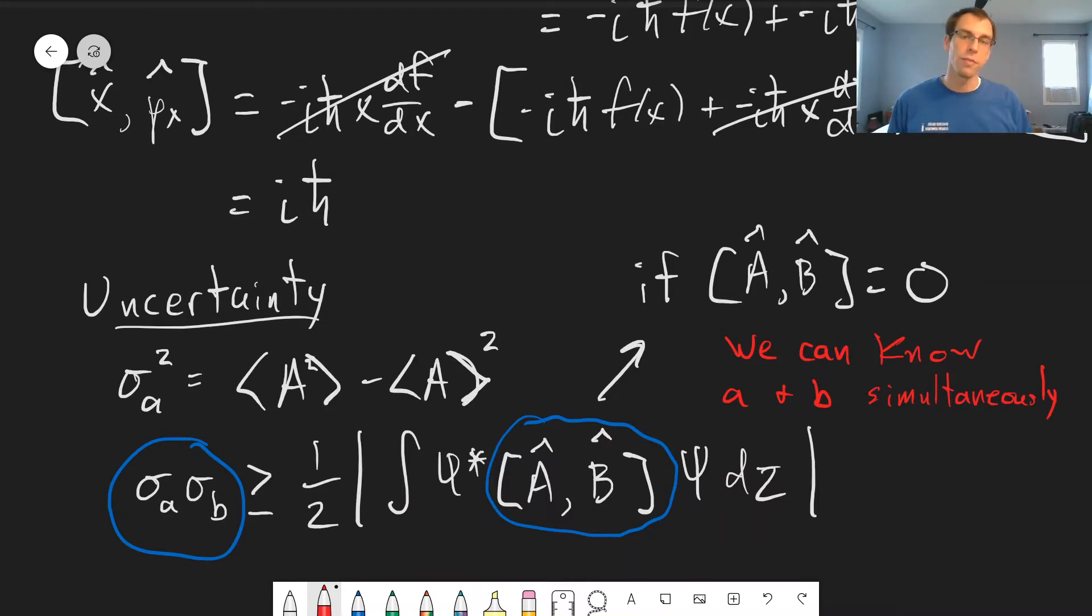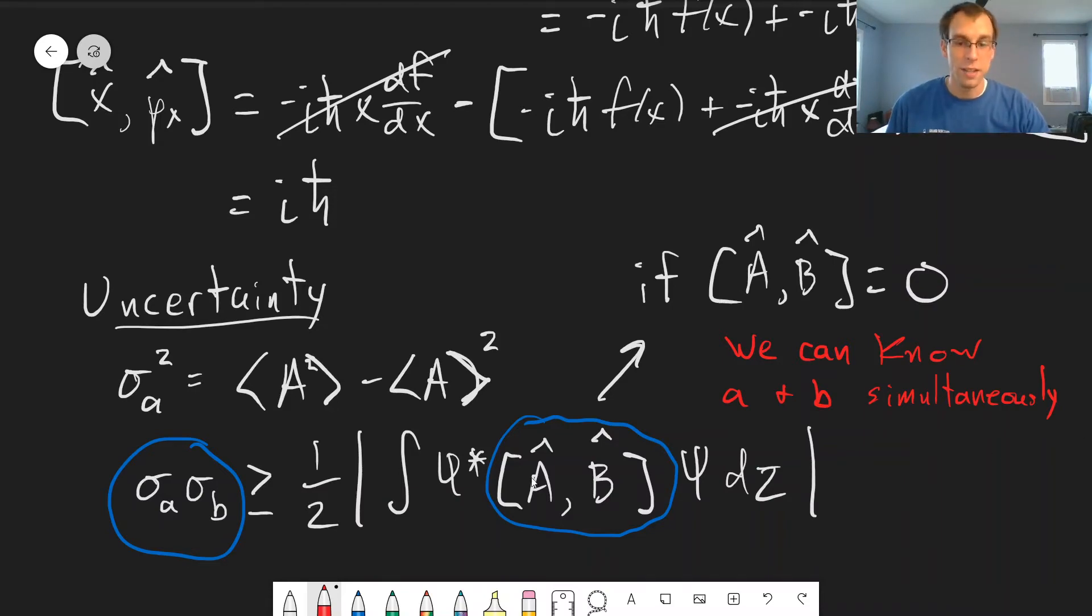In our example above, for kinetic energy and momentum, we can know those values at the same time because their commutator is equal to zero. But on the other hand, for position and momentum, let's go ahead and plug that into this equation here.